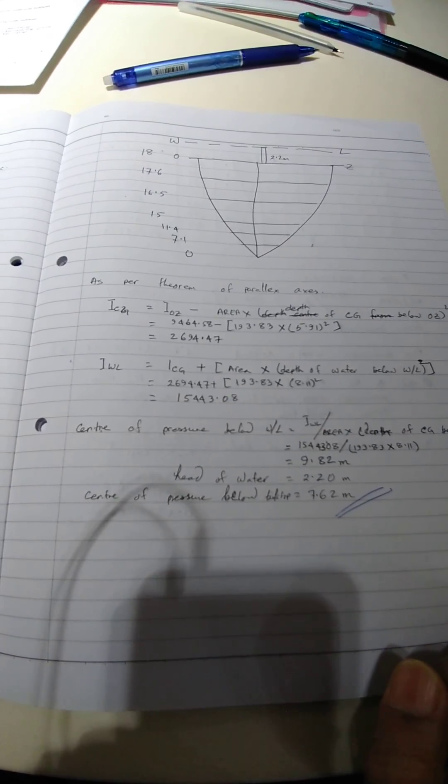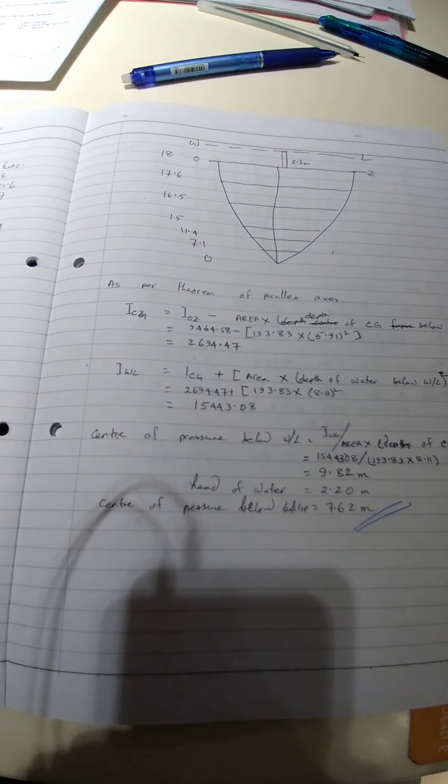So we applied that and got the result. Similarly, I of the water line equals ICG plus area into depth of CG below the water line — this time it is below the water line, which we already found to be 8.34. Applying all of that, we get I-waterline. Now, center of pressure below the water line equals I-waterline divided by area into depth of CG below the water line, so we get the total height. The center of pressure below the water line — deducting the head of water of 2.2 — gives center of pressure below the tank top: 7.86.